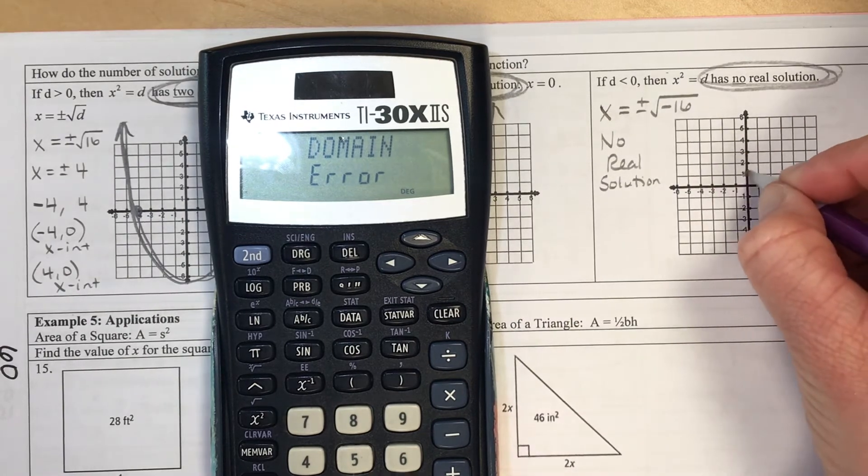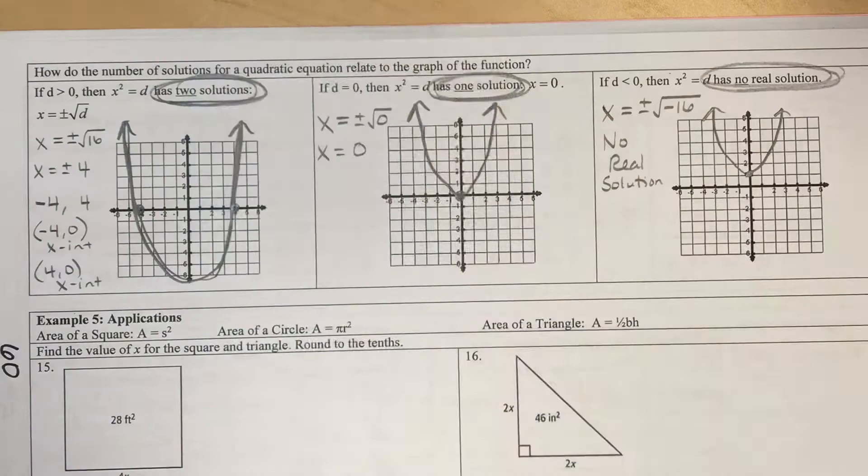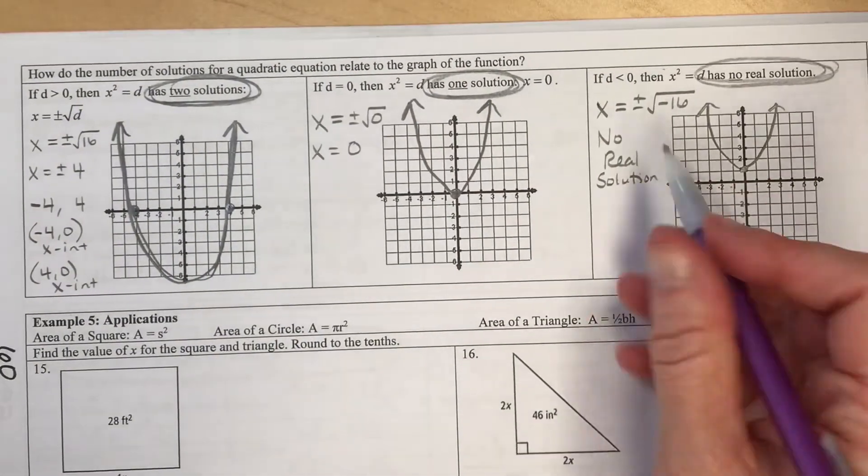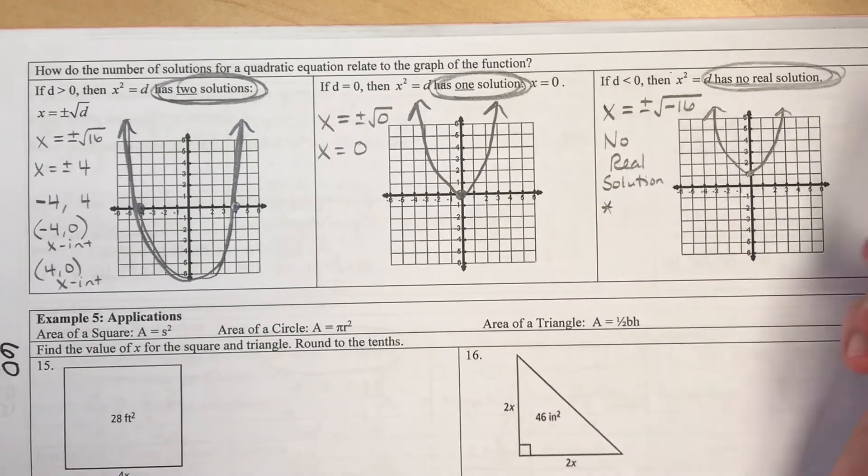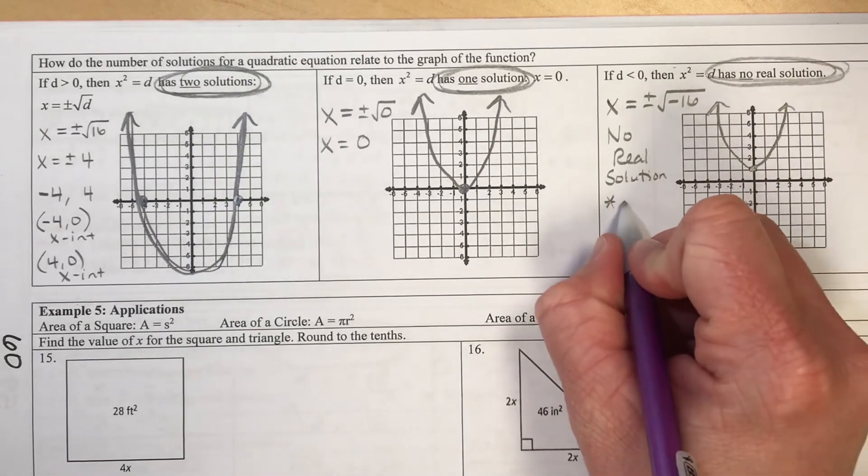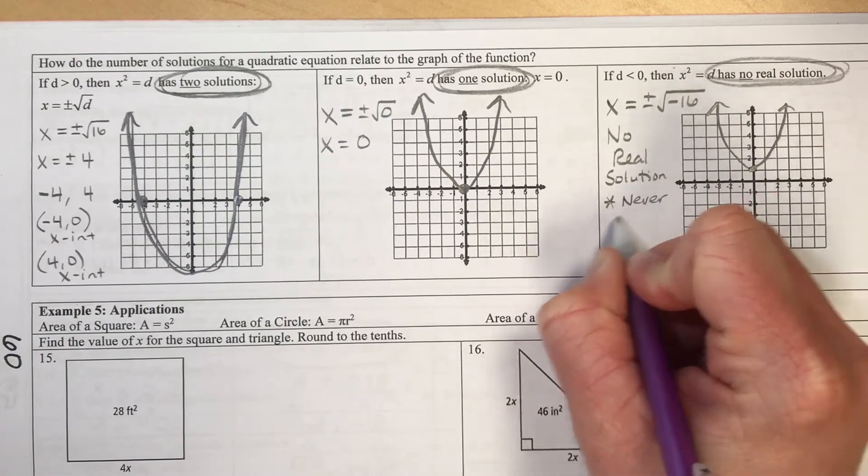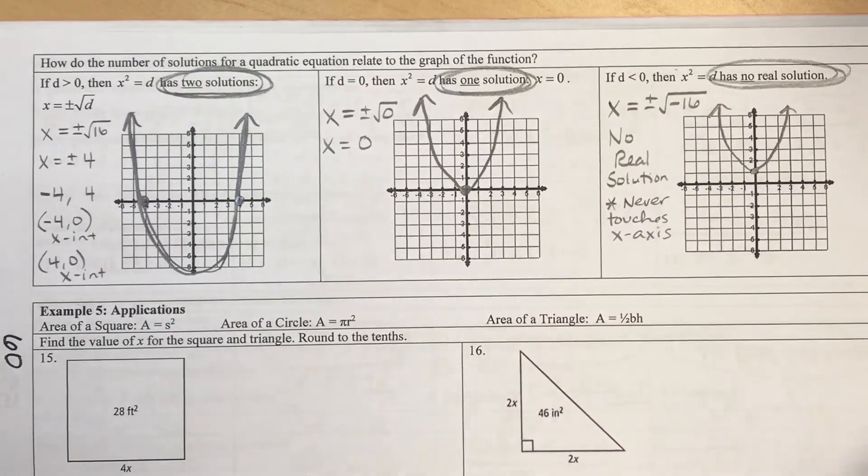...is that our parabola starts up above the x-axis and it has no real solution because it never touches the x-axis. And so that's just kind of the connection between the graph and why your solution might be no real solution. It's because it never touches the x-axis. And that's it.